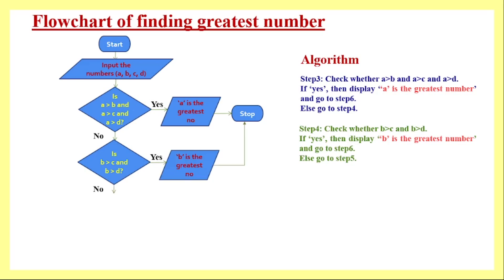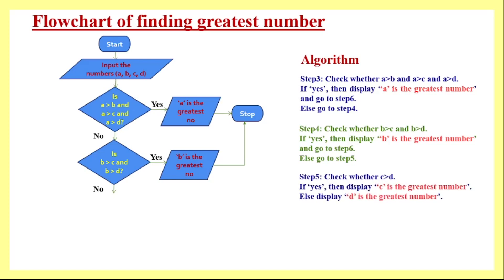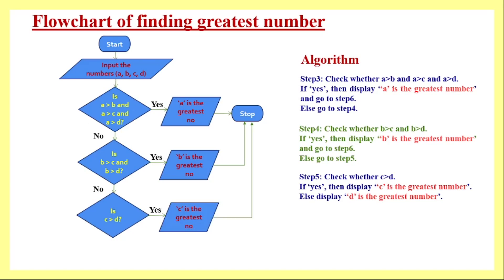If B greater than C and D is satisfied, we display that B is the greatest number and stop. If it fails, we check number three with respect to number four. If that is satisfied, we print that C is the greatest number and stop. If it fails again, we are left with only one option: D is the greatest number. We display that message and end execution.